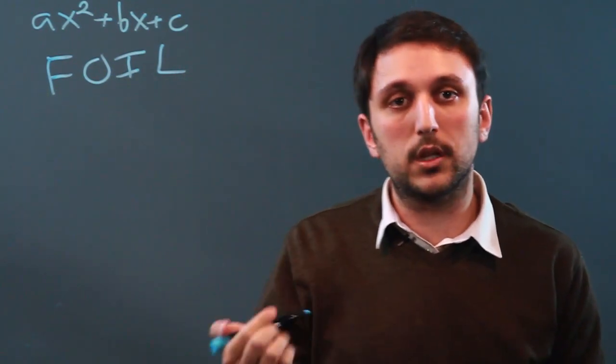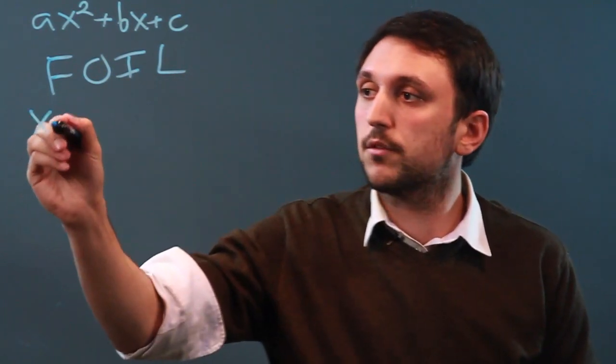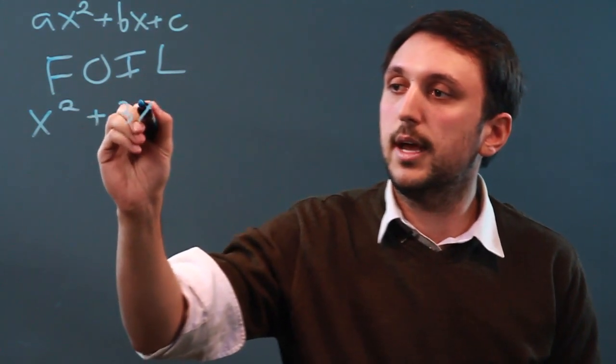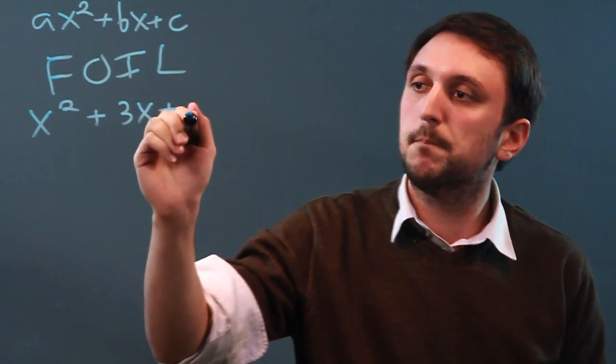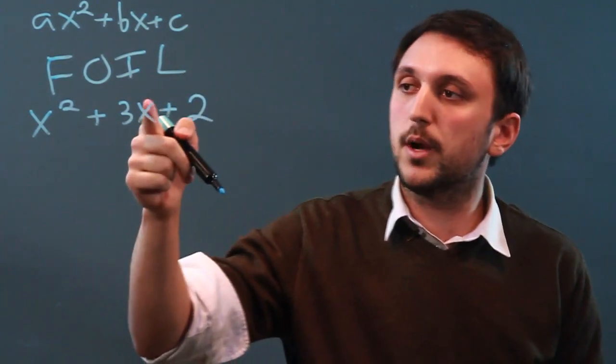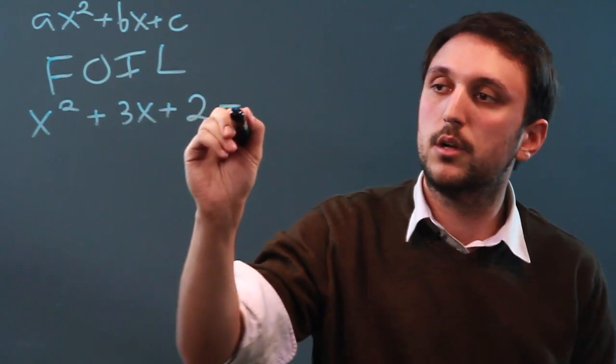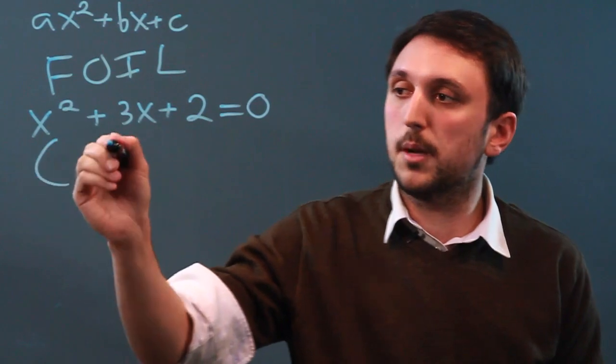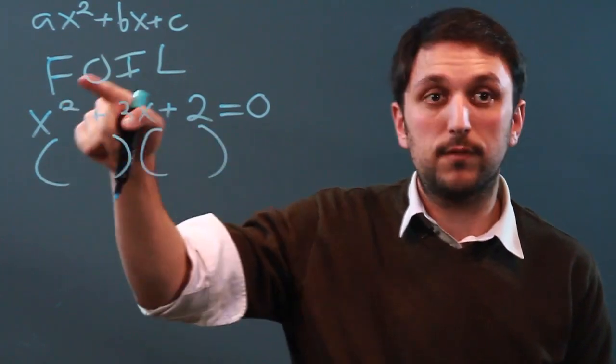Let's do that with a real equation. x squared plus 3x plus 2 equals 0. So we set up our two parentheses, and we FOIL.